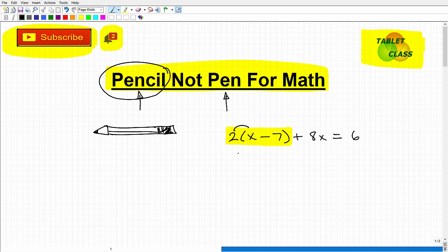So this would be 2 times x, so 2x. Instead of going 2 times 7, which would be minus 14, let's say you inadvertently go minus 7 plus 8x equals 6.